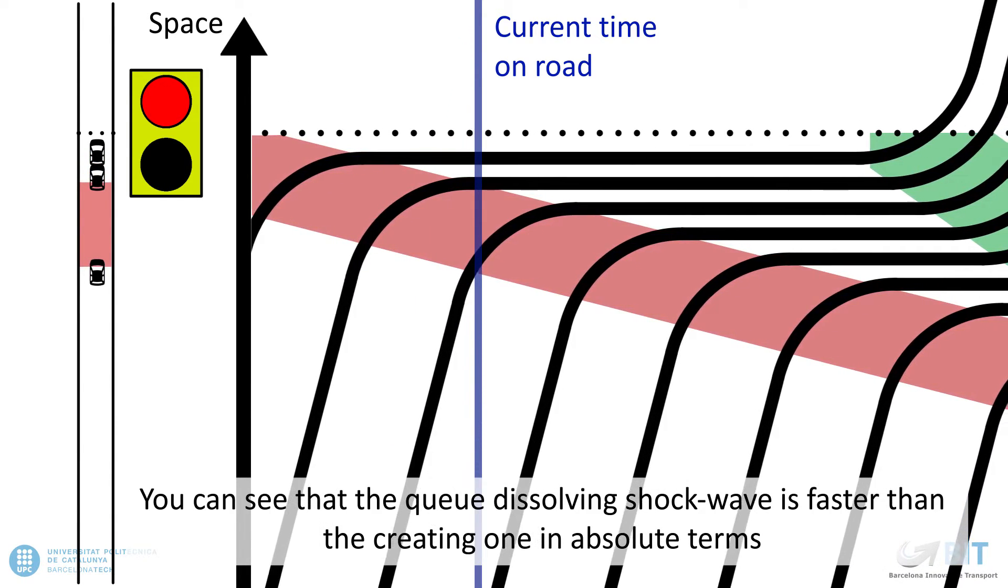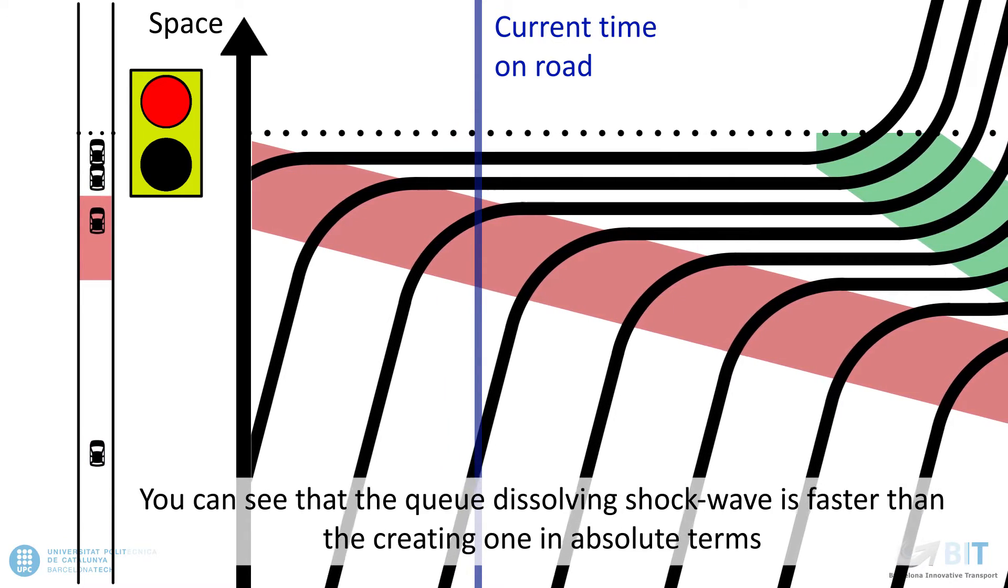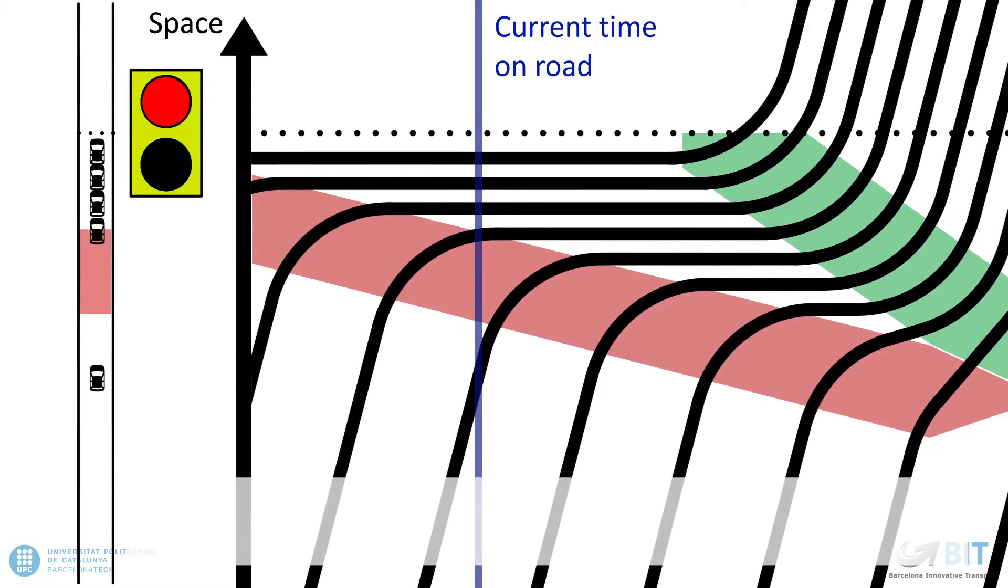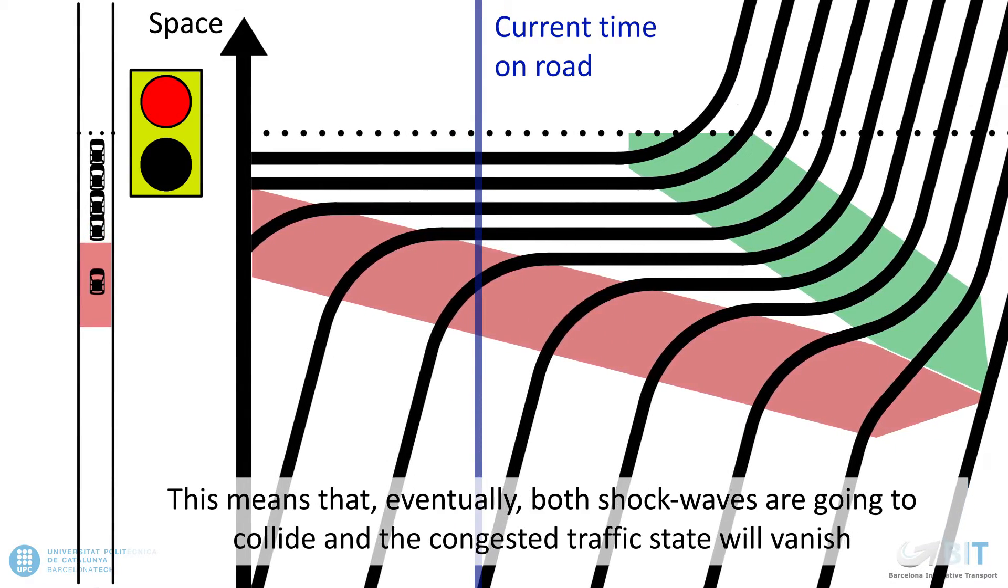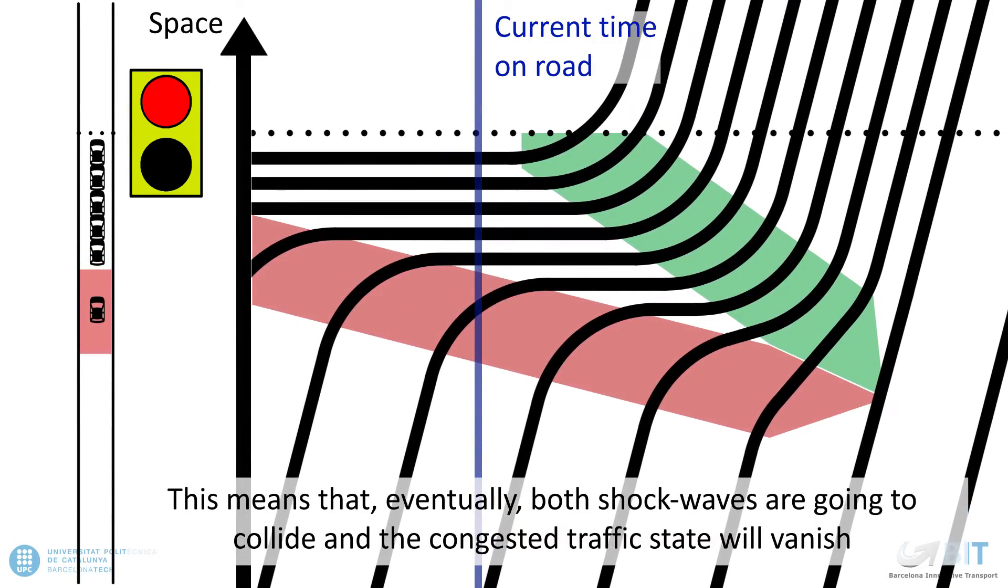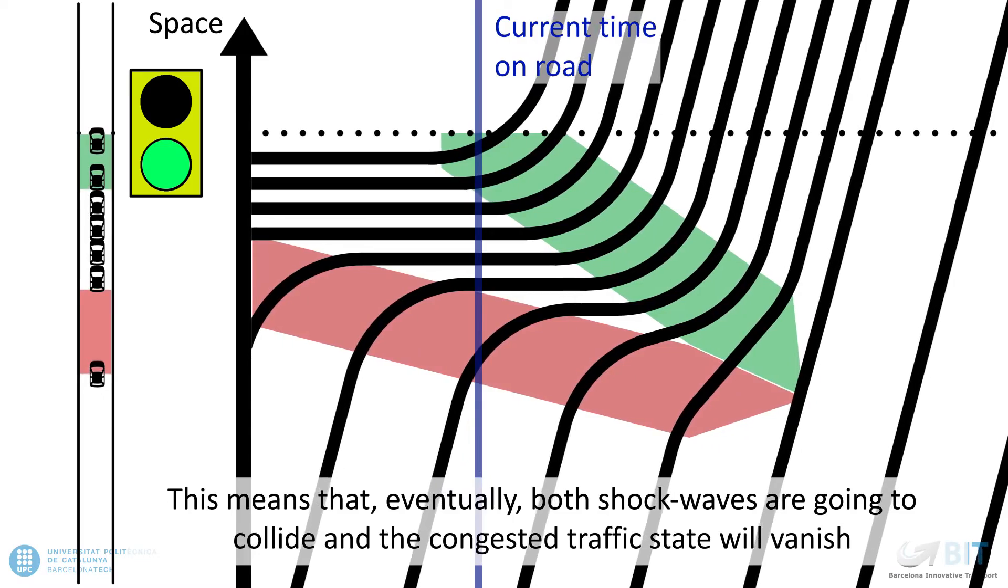You can see that the queue-dissolving shock wave is faster than the creating one, in absolute terms. This means that, eventually, both shock waves are going to collide and the congested traffic state will vanish.